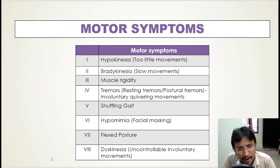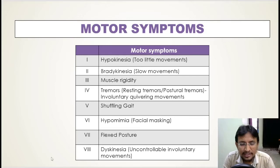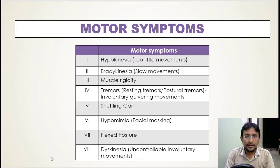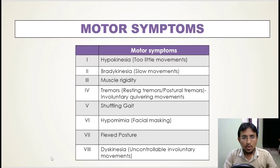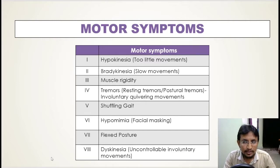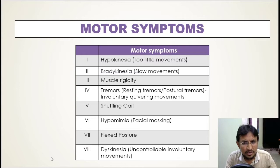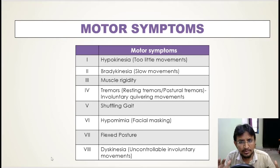The next Parkinson's disease symptom is tremors, which can be resting tremors or postural tremors. A tremor refers to involuntary quivering movements. Resting tremors occur when the muscle is relaxed, such as when the hands are resting on the lap. A person's hands, arms, or legs may shake involuntarily at rest, and often resting tremors only affect the hands or fingers.